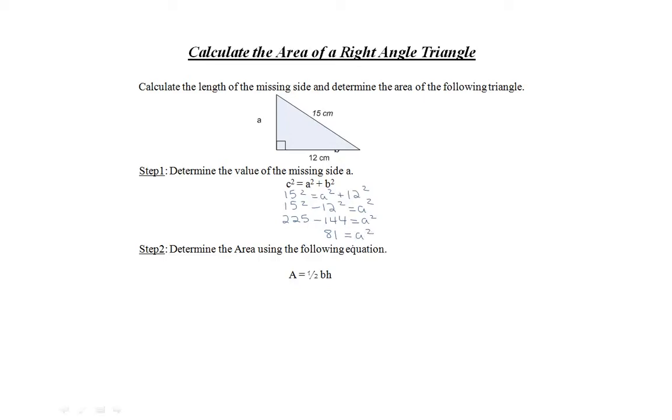To solve for A, you must take the square root of both sides. The square root of A squared is A. The square root of 81 is 9. So the final answer is 9 centimeters.